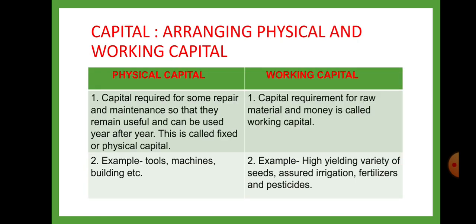Capital. Arranging physical and working capital. Let us see the difference between physical capital and working capital. Physical capital: Capital required for some repair and maintenance so that they remain useful and can be used year after year is called fixed or physical capital. Examples include tools, machines, buildings, etc.